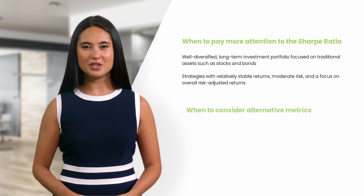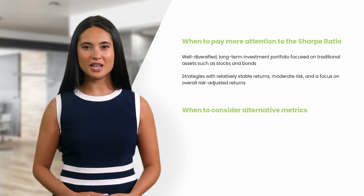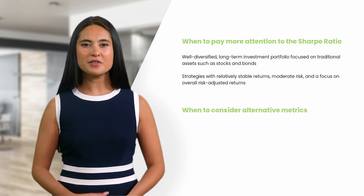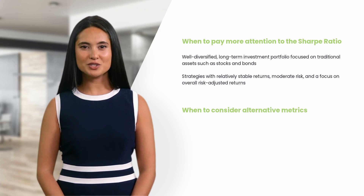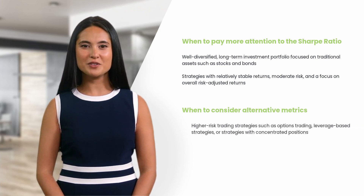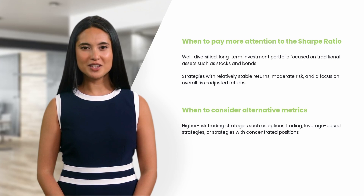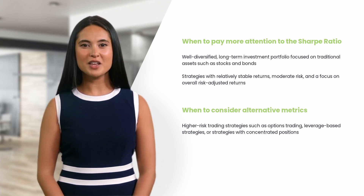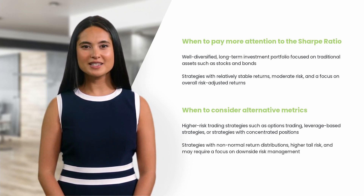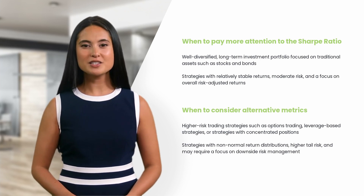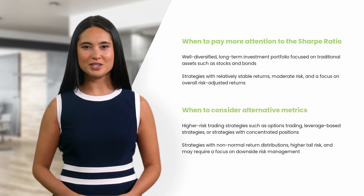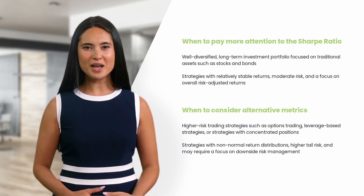On the other hand, alternative metrics such as the Sortino ratio and Calmar ratio come into play for strategies that may not conform to the assumptions of the Sharpe ratio — for instance, options trading, leverage-based strategies, or strategies with concentrated positions. These strategies often exhibit non-normal return distributions, higher tail risk, and require a focus on downside risk management. The Sortino and Calmar ratios offer more specific insights into tail risk and drawdowns, providing a better assessment of strategy viability.